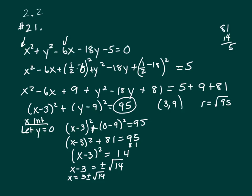And then the Y intercepts. Y intercepts you let X be 0. So plug a 0 in here. So that's going to give you 3 squared, which is 9 plus Y minus 9 squared equals 95. And that's Y minus 9 squared equals 86.